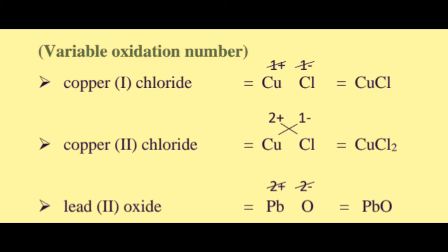Now we look at variable oxidation numbers. Some metals have more than one oxidation number — for example copper has oxidation numbers 1 and 2. For copper(I) chloride, Cu has oxidation number 1 plus and Cl has oxidation number 1 minus. 1 plus and 1 minus cancel, so the formula is CuCl.